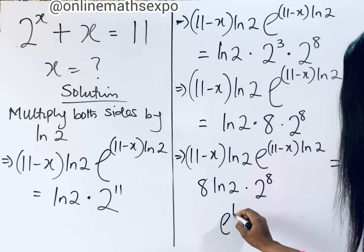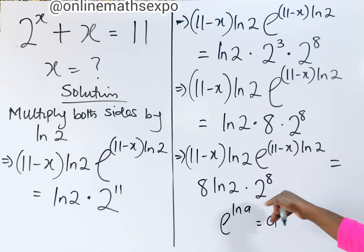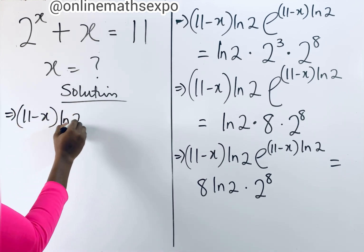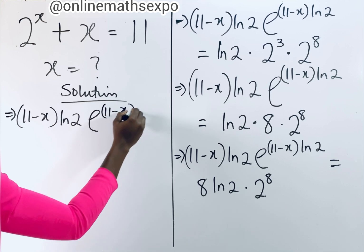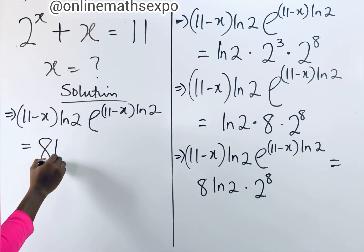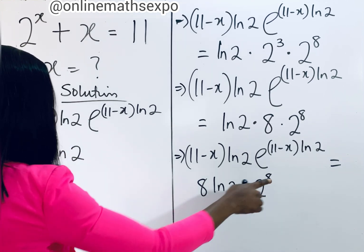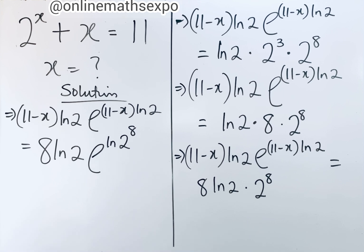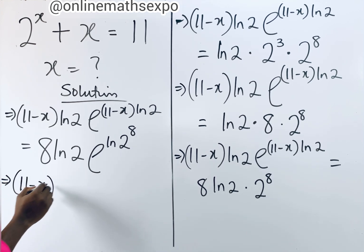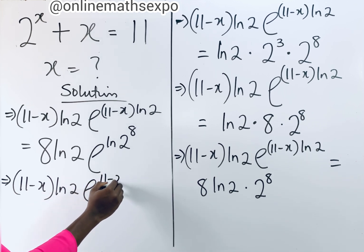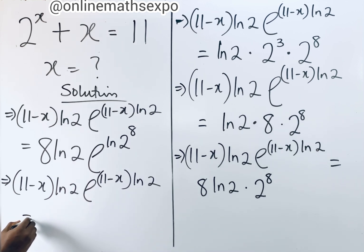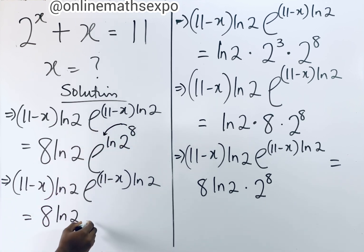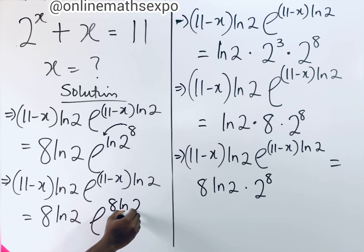We convert 2 to the power of 8 to e to the power of 8·ln(2) using the same rule. Applying the logarithm power rule, the right side becomes 8·ln(2)·e to the power of 8·ln(2). So our equation is: (11 minus x)·ln(2)·e to the power of (11 minus x)·ln(2) equals 8·ln(2)·e to the power of 8·ln(2).